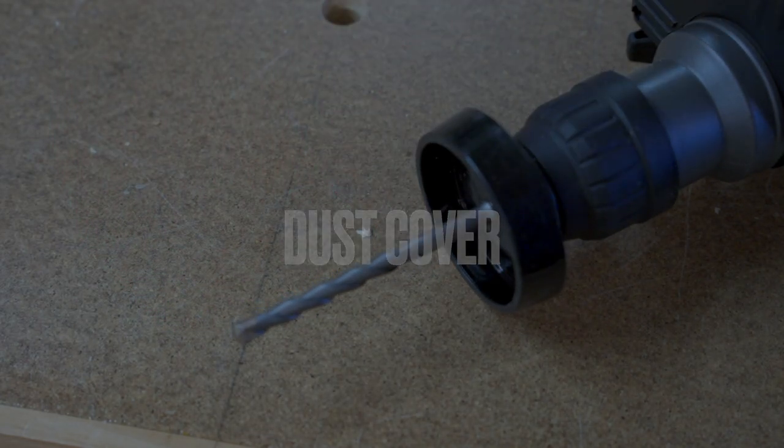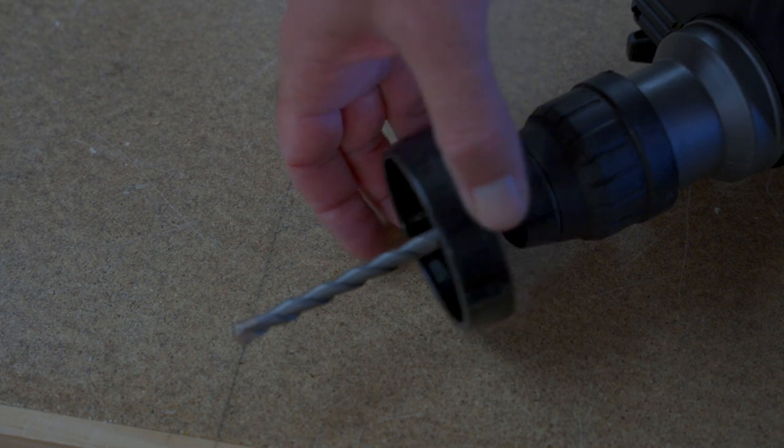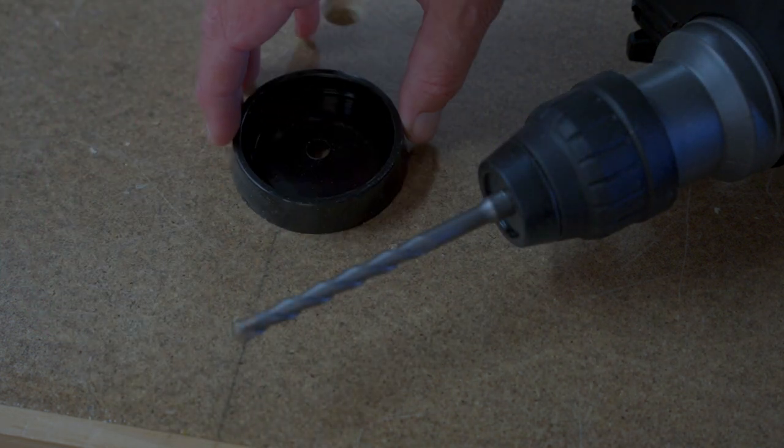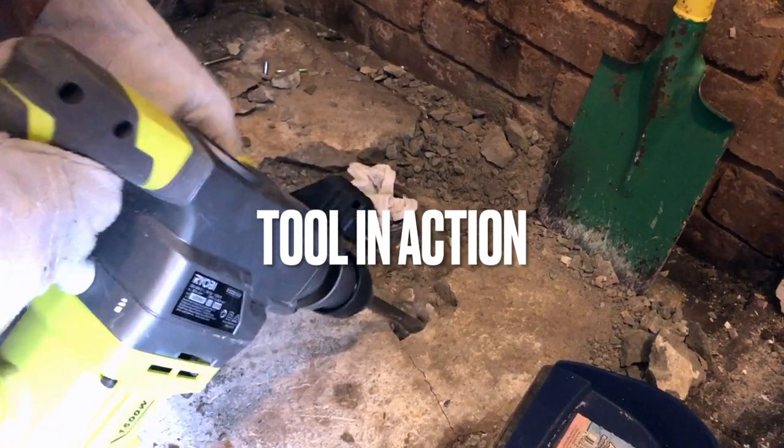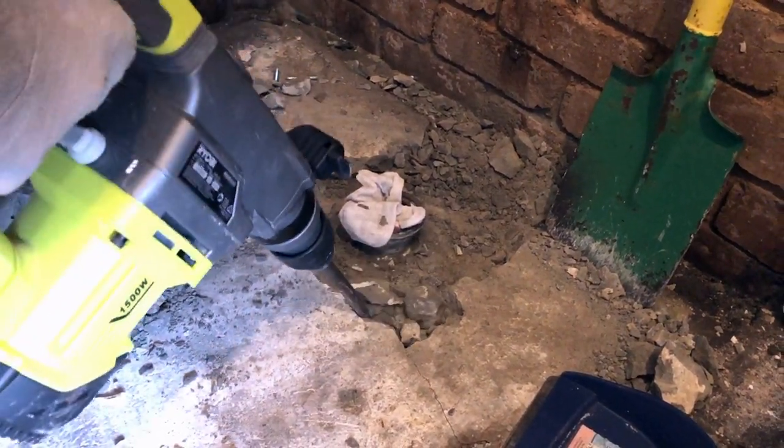There's a dust cover that you can use. Say you're going into brick, slide the dust cover over the bit and it'll stop dust from going into the tool chuck. There's nothing like a rotary hammer drill to just go through concrete like butter.